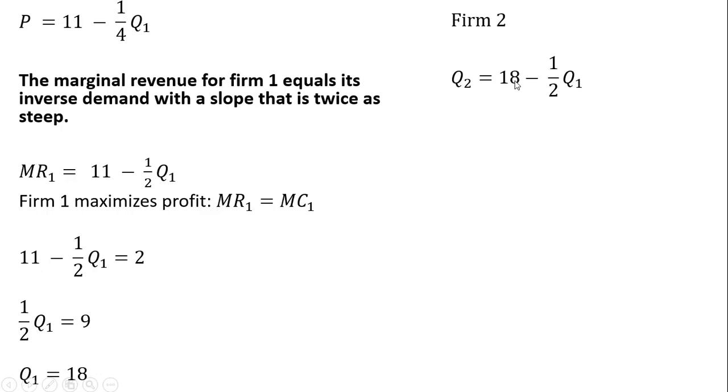As for Firm 2, we take Firm 2's reaction function from the first slide and plug in 18. We'll see that Firm 2 will produce 18 minus 9, or 9 units of output.